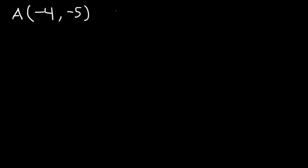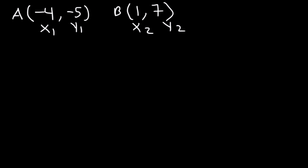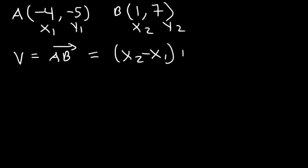Let's try another problem. Point A is at (-4, -5) and point B is at (1, 7). Express vector V in terms of its components i and j and find the magnitude. We can call these x1, x2, y1, and y2. If you don't want to graph it, you can use the equation: vector V, the directed line segment from A to B, equals (x2 minus x1) times i plus (y2 minus y1) times j.